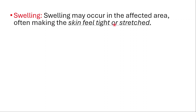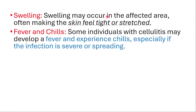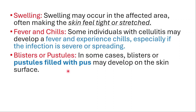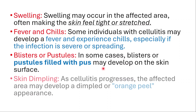Swelling may occur in the affected area, often making the skin feel tight or stretched. Some individuals with cellulitis may develop a fever and experience chills, especially if the infection is severe or spreading. In some cases, blisters or pustules filled with pus may develop on the skin surface. As cellulitis progresses, the affected area may develop a dimpled or orange peel appearance.